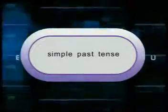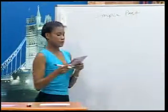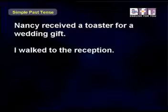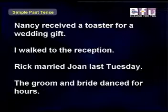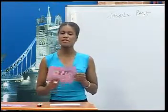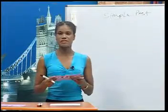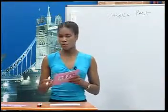Simple Past Tense. Now let's quickly review the simple past. Let's look at some examples. Nancy received a toaster for a wedding gift. I walked to the reception. Rick married Joan last Tuesday. The groom and bride danced for hours. The simple past is used to talk about activities or situations that began and ended in the past. Frequently, expressions such as yesterday, last, or ago are used in these sentences. Some verbs have irregular forms in the simple past.